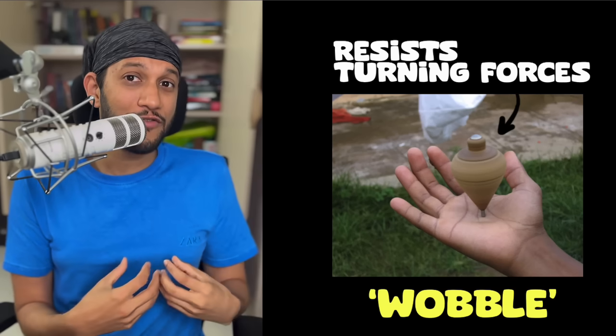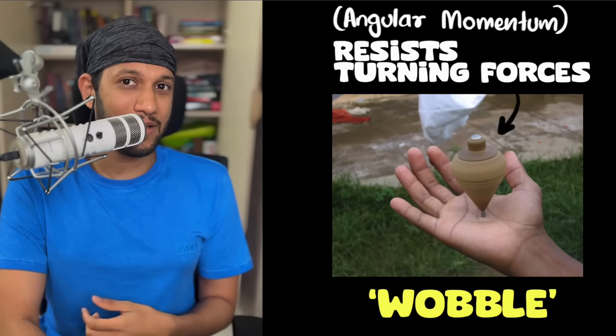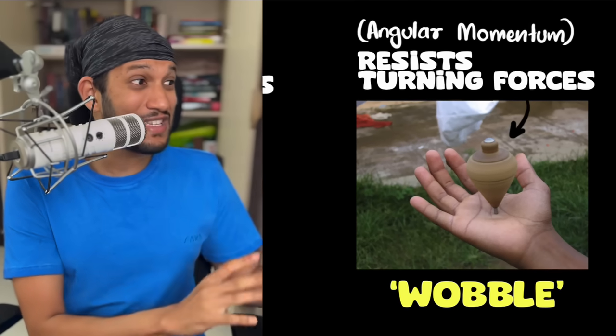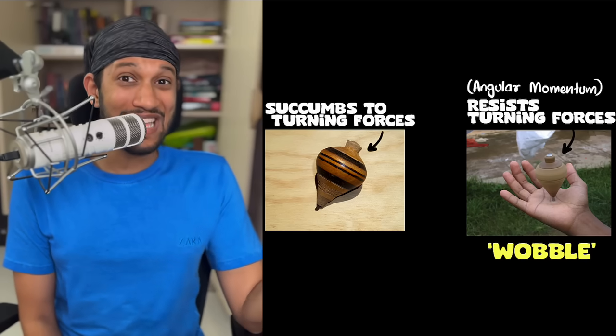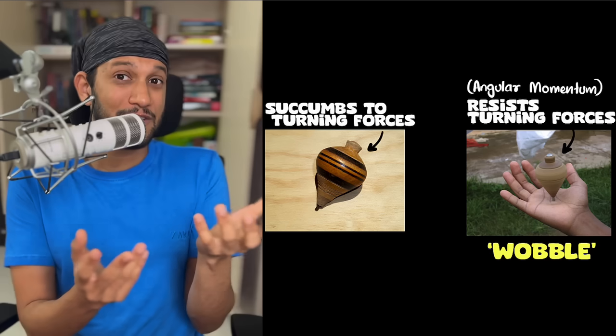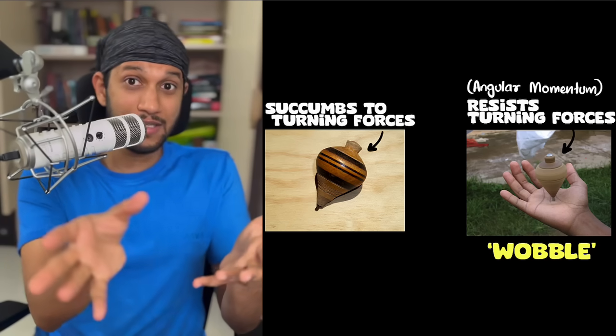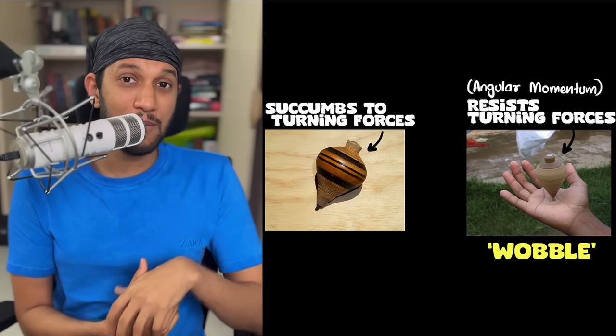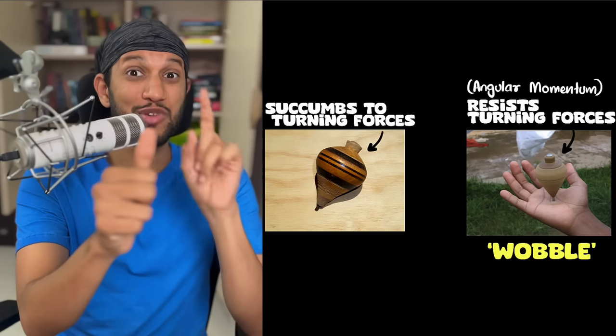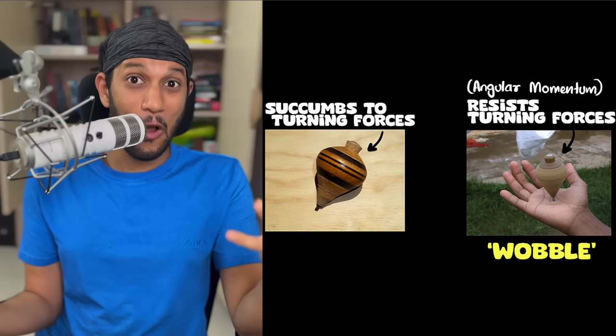The technical term for this wobbling motion is called precession. So, something that is spinning will only precess, and it will be very hard to make it turn. It can resist turning forces. And this ability of something that spins, that can resist turning forces, is what we call angular momentum. And so, a spinning top has angular momentum. And so, Feynman says, look, we can actually test if something is spinning or not. If it resists that turning, and if it keeps wobbling, if it precesses, then I know it is spinning.